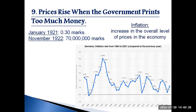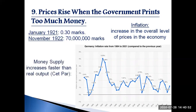By inflation, we mean an increase in the overall level of prices in the economy. In almost all cases of large or persistent inflation, the culprit is the growth in the quantity of money. When a government creates large quantities of a nation's money, the value of money falls. In Germany in the early 1920s, when prices were on average tripling every month, the quantity of money was also tripling every month.